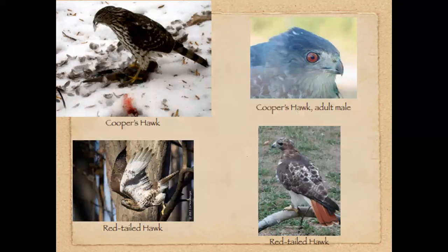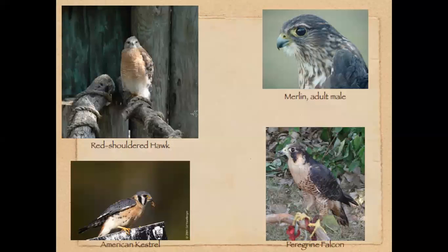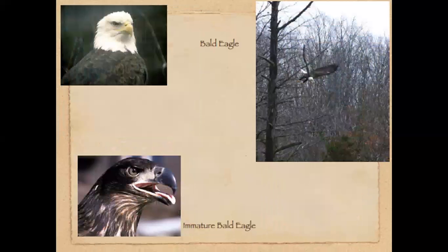Here we have the hawks and some more hawks and falcons. The eagles are also part of this group. It's worth noting that the immature bald eagle can look remarkably like a golden eagle.